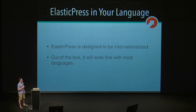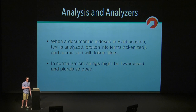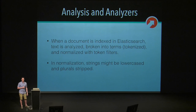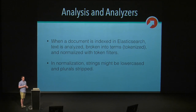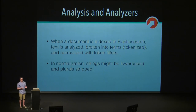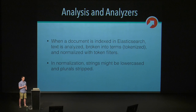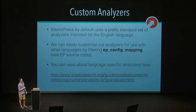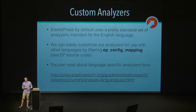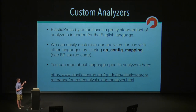ElasticPress is designed to be internationalized. Out of the box, it works fine with most languages. When a document is indexed, it's tokenized and broken into terms — plurals are stripped out and prefixes are handled in a specific way, all done by default in an English manner, which works fine for most languages. But for certain languages, you'll be better off specifying your own analyzer. Analyzers are available in most major languages at this point. To do that with ElasticPress, all you have to do is filter EP config mapping and tweak it to use whatever language you want.